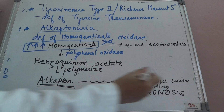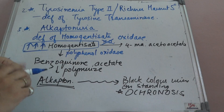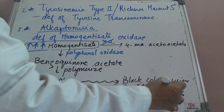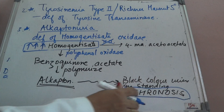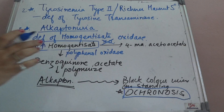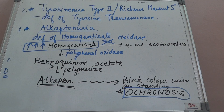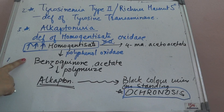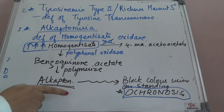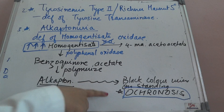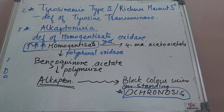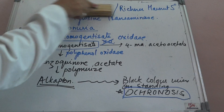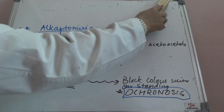Ochronosis refers to the black color of urine on standing. Additionally, alcaptonuria leads to deposition of black color pigments on the vertebrae. So: deficiency of homogentisate oxidase → increased homogentisate → benzoquinoneacetate (via polyphenol oxidase) → polymerizes to alcapton → black urine on standing. This is alcaptonuria.